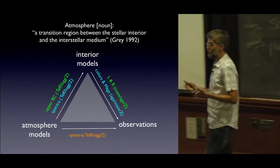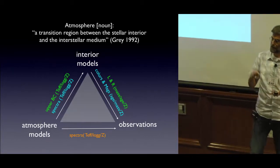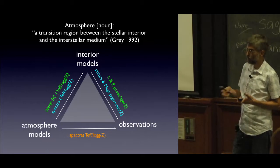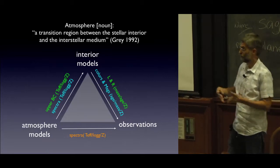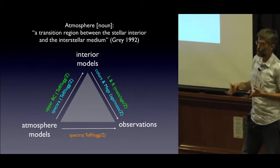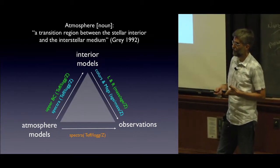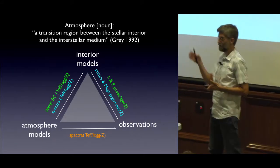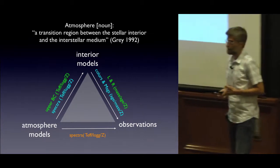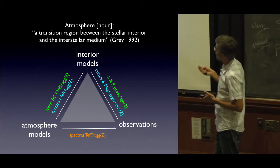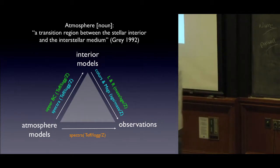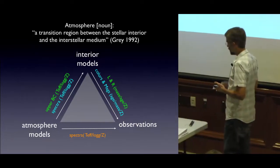The atmosphere regulates the release of heat from the interior and plays an important role as a boundary condition. The interior models use that, but they also use the spectral information to give you things like colors and magnitudes as a function of age for a given mass and metallicity. So you need the atmosphere models for the interior models, but the arrow goes only really one way. I don't need interior models necessarily to run an atmosphere model.